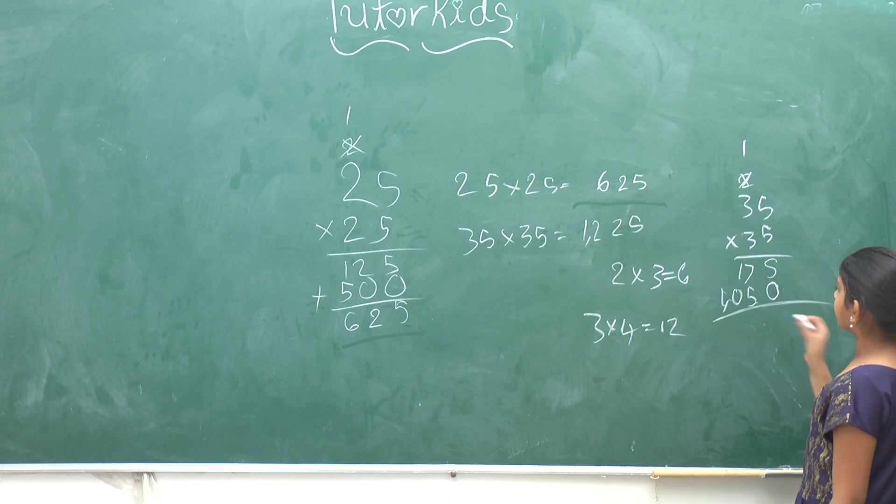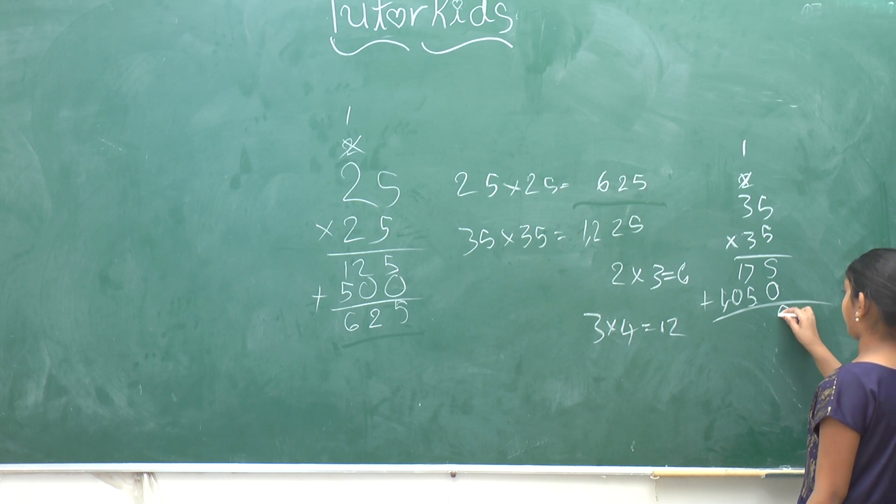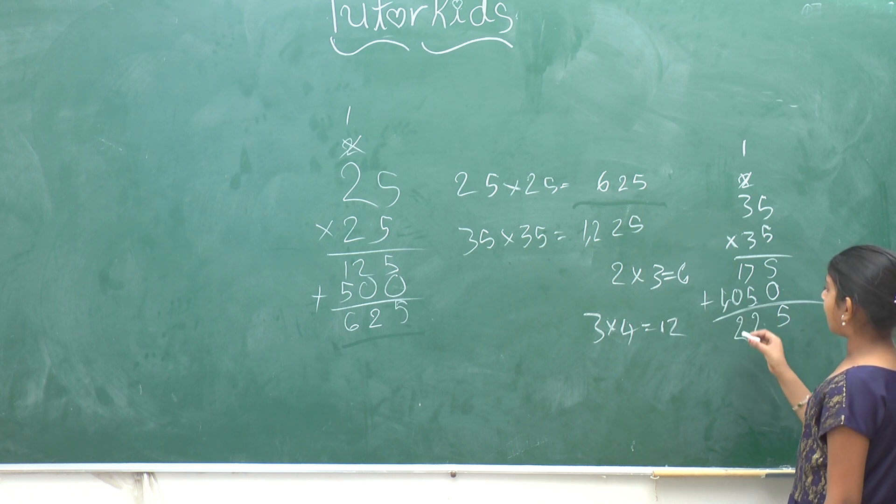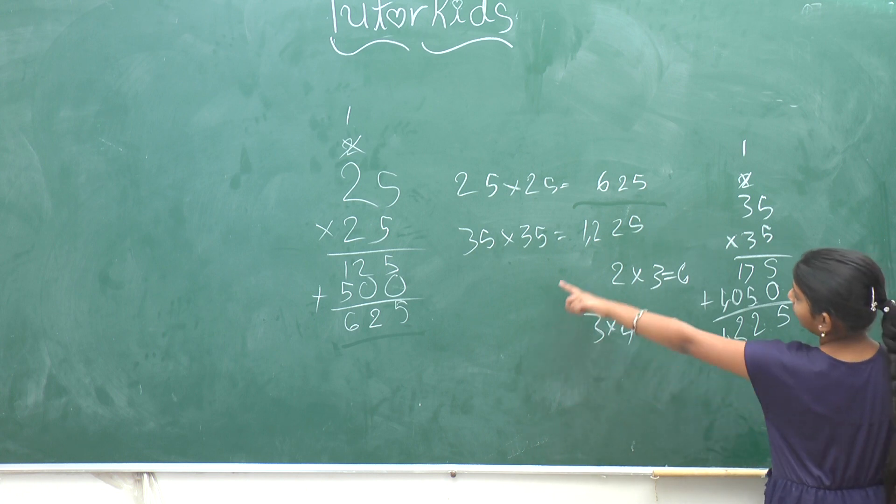So we need to add it now. 5 plus 0 is 5. 7 plus 5 is 12, you carry the 1. 1 plus that 1, and it equals the same answer as this.